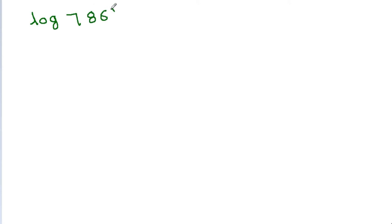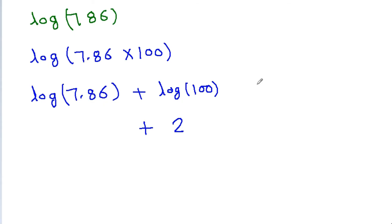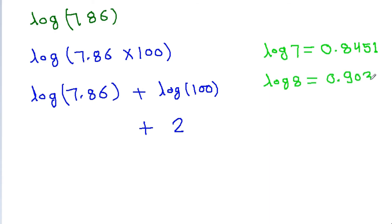If you have to find the value of log 786, you can write this as log 7.86 plus log 100. We know log 100 is 2. For log 7.86, we know log 7 is 0.8451 and log 8 is 0.9030, so log 7.86 is approximately 0.89. Therefore, log 786 ≈ 2.89.